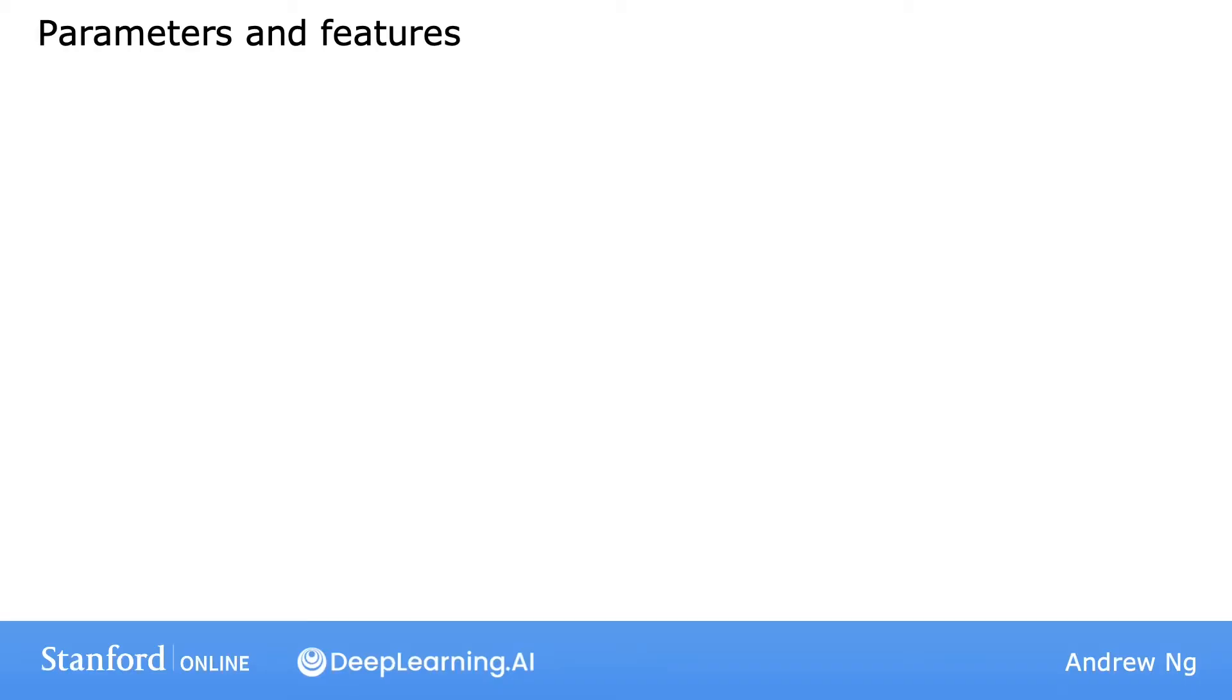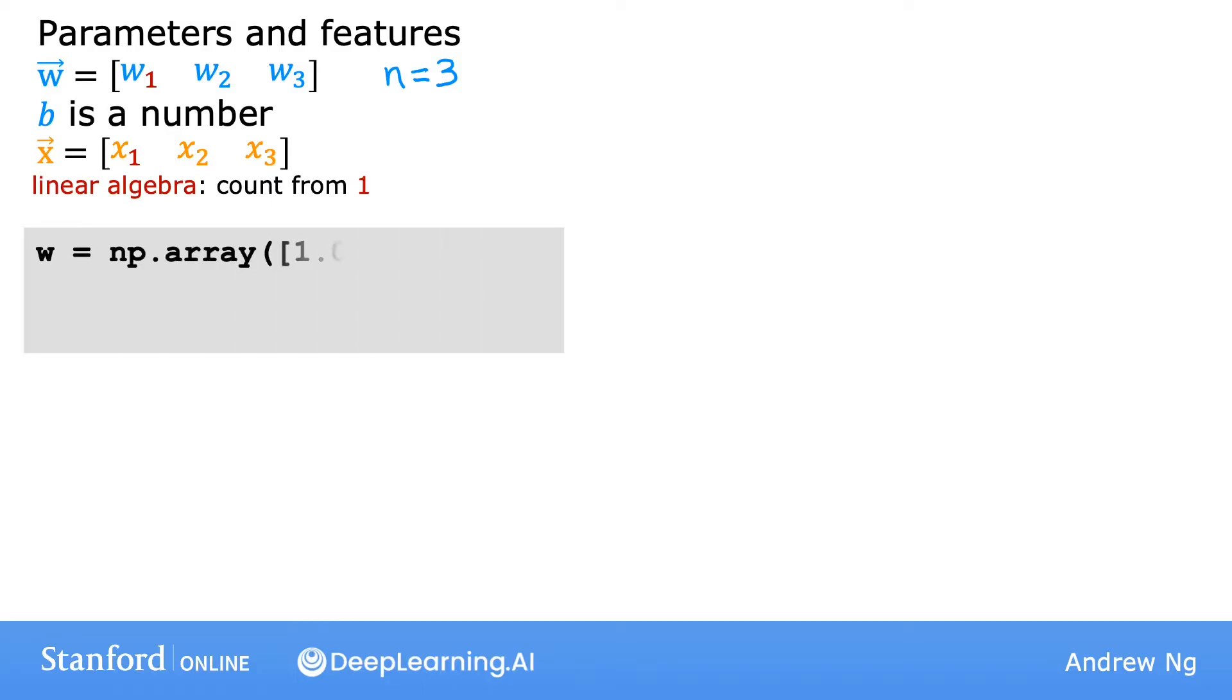Let's look at a concrete example of what vectorization means. Here's an example with parameters w and b, where w is a vector with three numbers, and you also have a vector of features x with also three numbers, so here n is equal to three. Notice that in linear algebra, the index or counting starts from one, so the first value is subscripted w1 and x1. In Python code, you can define these variables w, b, and x using arrays like this. Here I'm actually using a numerical linear algebra library in Python called numpy, which is by far the most widely used numerical linear algebra library in Python and in machine learning.